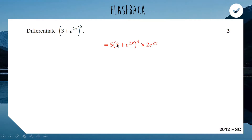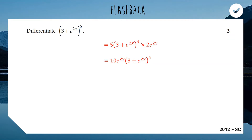The derivative of 3 is 0. The derivative of E to the 2x, from one of our previous lessons, is going to be E to the 2x multiplied by the derivative of the power, which is 2. So our derivative is 2E to the 2x. We can put that at the front with the 5 and turn it into 10E to the 2x — and there is your full marks answer. You'll be getting one mark for applying the chain rule and one mark for correctly differentiating E to the 2x, bringing you up to two marks.